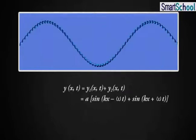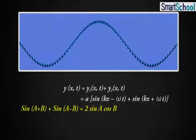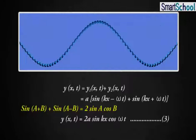Now, using the familiar trigonometric identity sin(A+B) plus sin(A-B) is equal to 2 sin A cos B, we get y(x,t) is equal to 2a sin(kx) cos(ωt). Let it be equation 3.